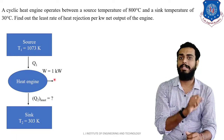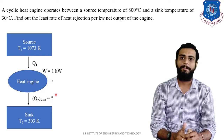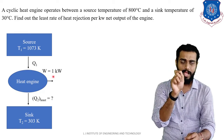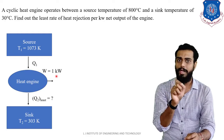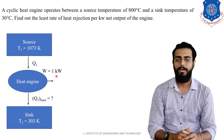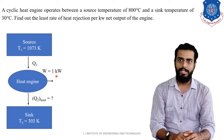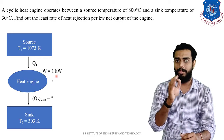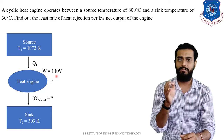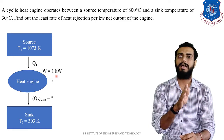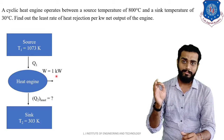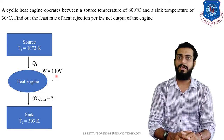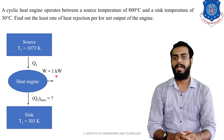We need to find the least rate of heat rejection Q2, per kilowatt net output of the engine. 'Per kilowatt net output' means the work done or power produced is 1 kilowatt — so W = 1 kW is indirectly given. Whenever you encounter words like 'least,' 'reversible,' or 'Carnot,' you shall consider the Carnot reversible cycle. Least heat rejection in a heat engine is only possible when the engine works on the Carnot cycle.